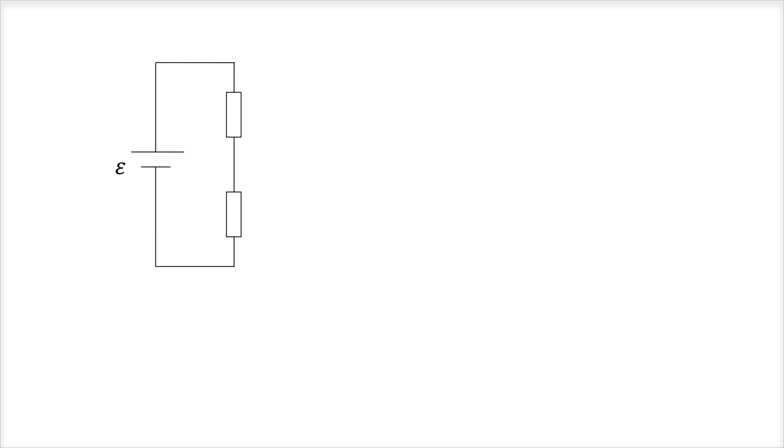This is a potential divider circuit, or a voltage divider, because the EMF, the voltage, is divided across the two series resistors. We know these are in series because there's only one pathway for the current to follow. There's no place for it to split off and take a second path.